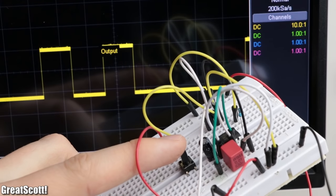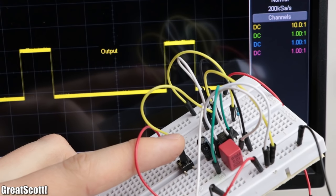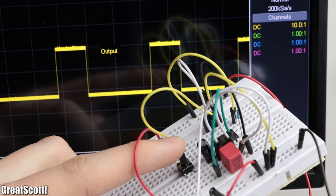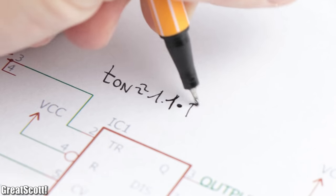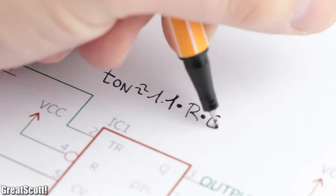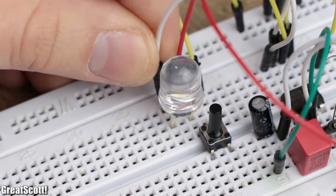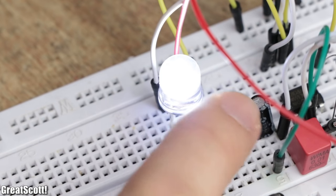This configuration is called monostable because only the low output is stable. The high output is just temporary and depends on the dimensions of the used resistor and capacitor. A popular application of this circuit is creating a delay for notification lights or something similar.